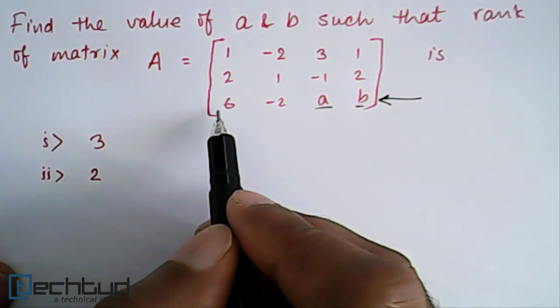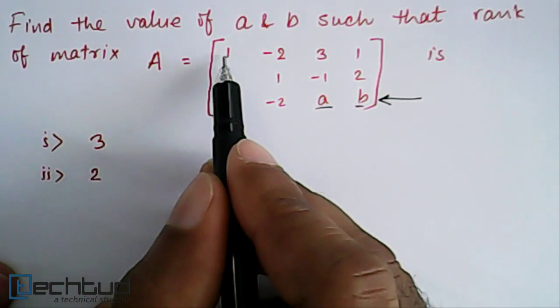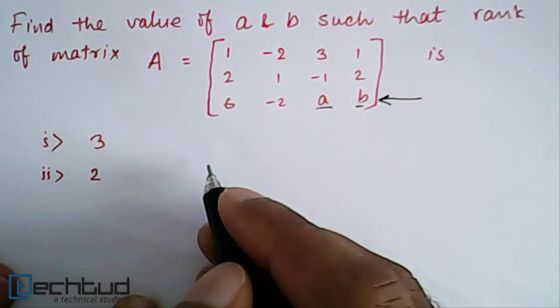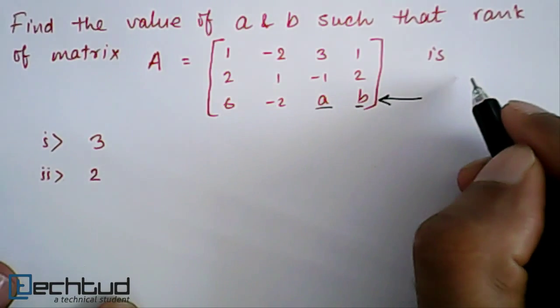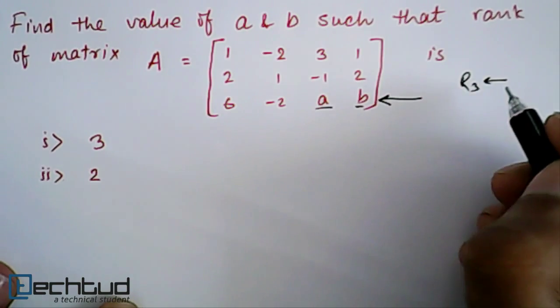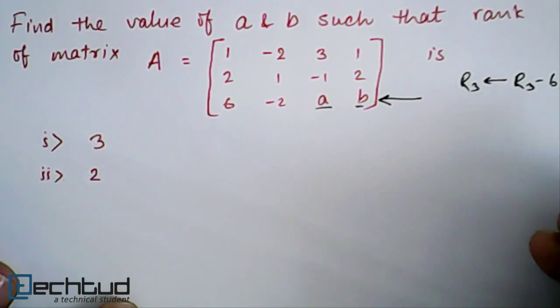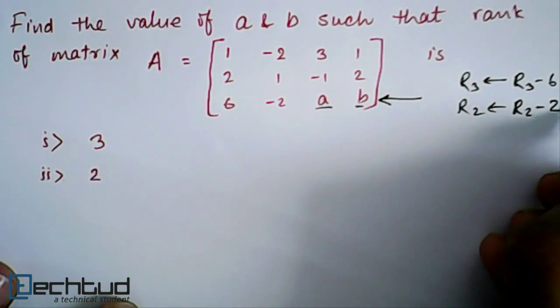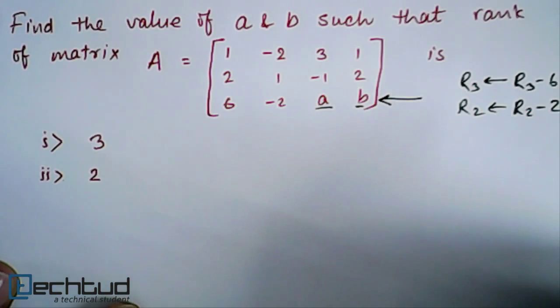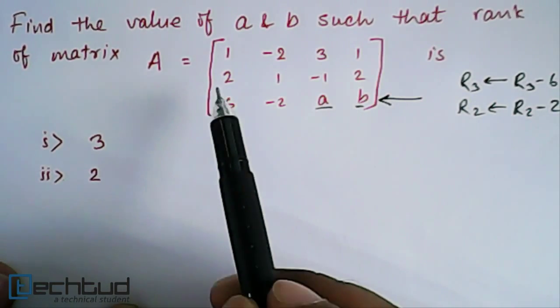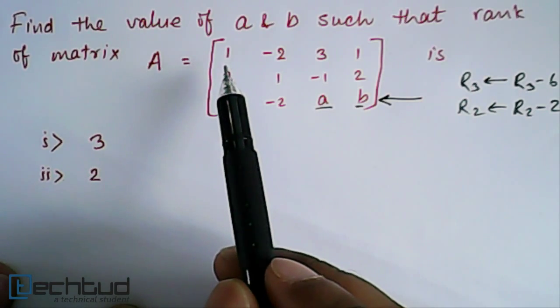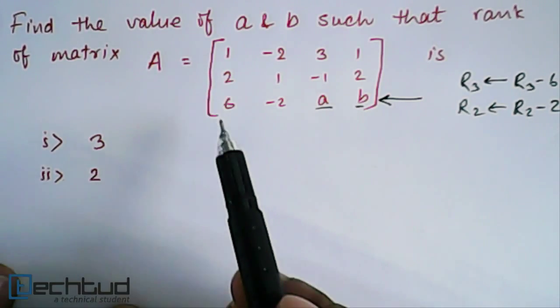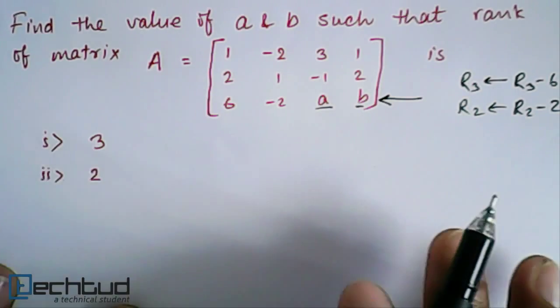From R3, we will subtract 6 times R1 and then from R2, we will subtract 2 times R1. R3 will be replaced by R3 minus 6 times R1, and R2 will be replaced by R2 minus 2 times R1. It's always good to choose a row to subtract from another rows which have 1, so that the multiplication will be easy.